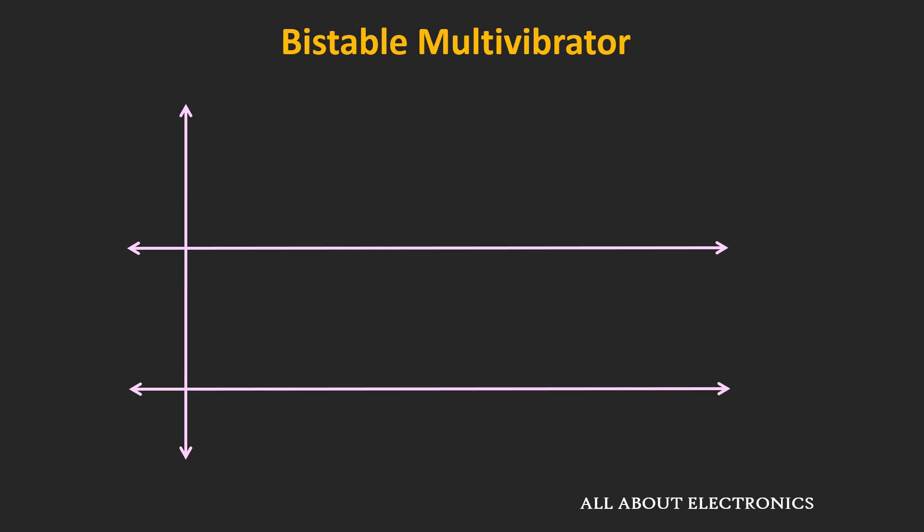In the previous videos, we had seen that this bistable multivibrator has two stable states. At any given point of time, the output used to be in one of the two stable states. And whenever some external triggering action happens, then the output used to switch from one stable state to the another stable state.